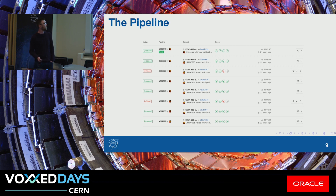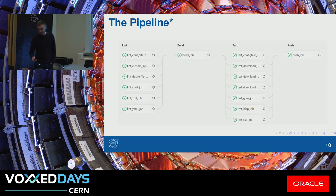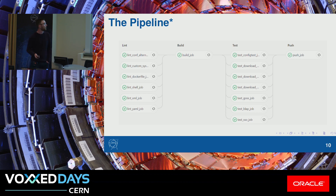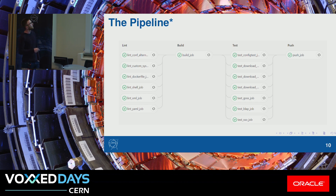An individual pipeline run looks something like this — there's an asterisk because this is an older picture, but it shows the concept. We have four stages. We first lint all of the source code that goes into the image to make sure there are no silly mistakes. Then we build the image and pass it as an artifact to the test and push stage. Each test is run in its own job with its own Docker daemon, so it's completely isolated. And the push stage is only run if all of the other stuff succeeds.